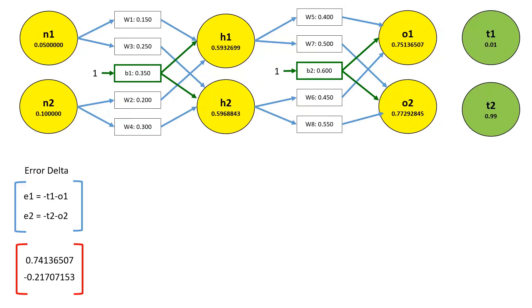To get started, we first need to calculate the error delta — that is, how far our network's output is from the desired target output. We simply subtract each of the output values from the target values and negate the result.